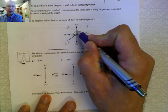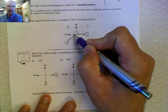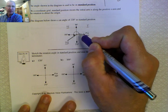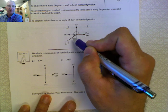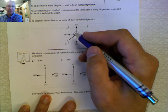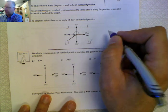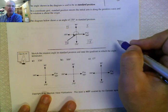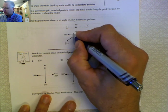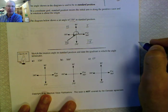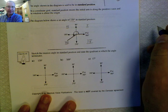Do we need to use a protractor to draw a 220-degree angle? No. We just need to make sure it's in the correct quadrant and approximately where we believe it's situated. Because we're drawing a positive 220-degree angle, we draw an arrow to show the rotation is positive, showing where it starts and where it ends.